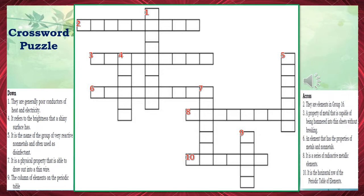Number 4: It refers to the brightness that a shiny surface has. The correct answer is luster. Number 5: It is the name of the group of very reactive non-metals and often used as disinfectant. The correct answer is halogen.